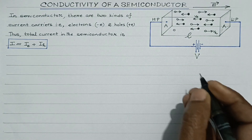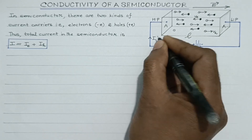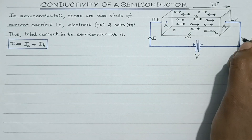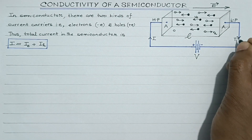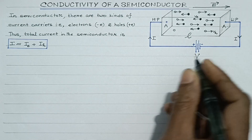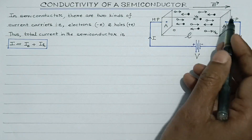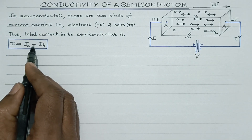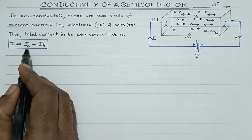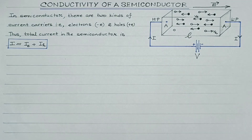And students, this is the conventional current. Connecting jo wire hai, usme jo current hai, that's entirely due to the movement of free electrons. And this is the conventional current. So, net current inside the semiconductor is given by the sum of the current due to the flow of electrons and the current due to the flow of holes.